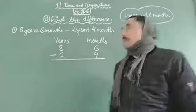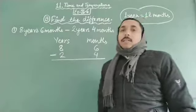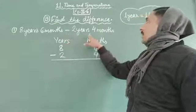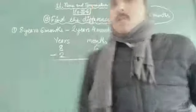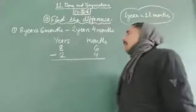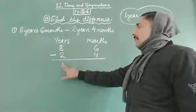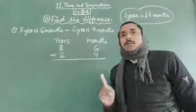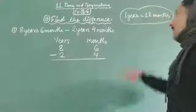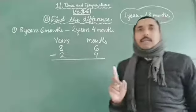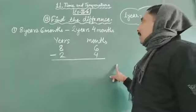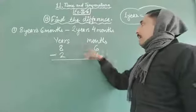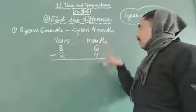तो 11.6 exercise में Find the Difference, यानि कि subtract करना है हमको। पहला question है 8 years 6 months minus 2 years 4 months। सबसे पहले हमको years के column में years की values और months के column में months की values लिखनी होंगी। और याद रखना है कि 1 year equals 12 months।